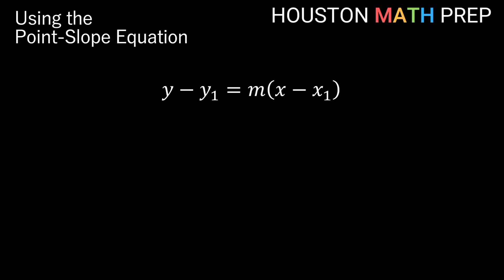Hey everyone, Houston Math Prep here. In this video we're going to talk to you about using the point-slope equation. The point-slope equation we have here: y minus y1 equals m times the quantity x minus x1. You'll use this equation most often when you are answering a problem that starts with something like 'find the equation of the line.' That's when your go-to will likely be the point-slope equation.